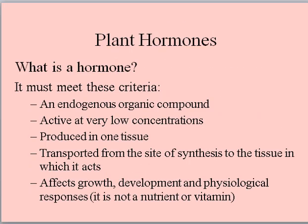Plant hormones. What is a hormone? It must meet these criteria: an endogenous organic compound, active at very low concentration, produced in one tissue, transported from the site of synthesis to the tissue in which it acts, and it affects growth, development, and physiological responses. It is not a nutrient or a vitamin.